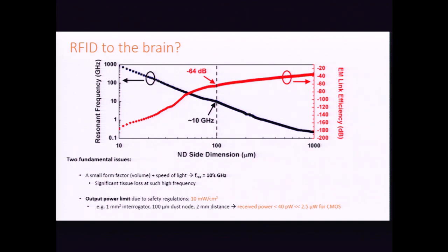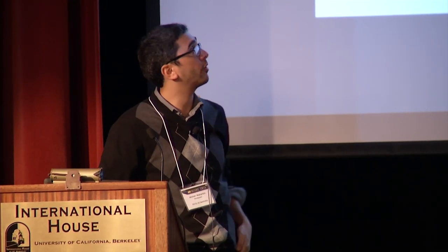So if you can look here, this is link efficiency as a function of dimension. As I make the thing that's in the brain tinier and tinier, so you can see for about a centimeter, not bad, but millimeters start to get bad. And if you go smaller than that, all bets are off. So any dream of having very tiny things dispersed in the brain that would record without needing all these wires, any dream of doing that with electromagnetics runs into problems.